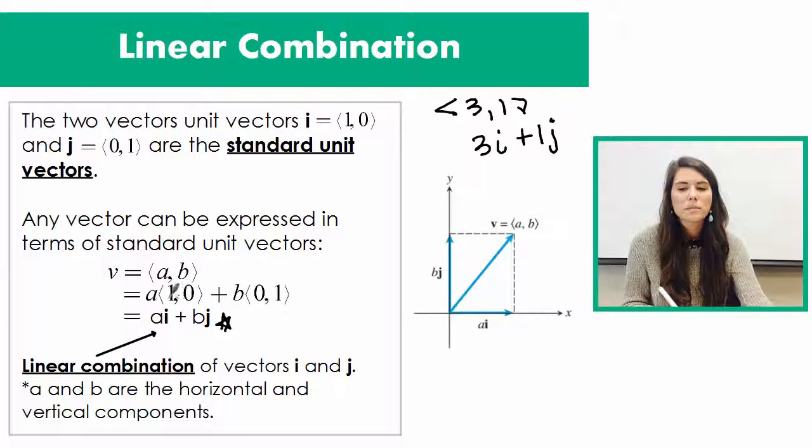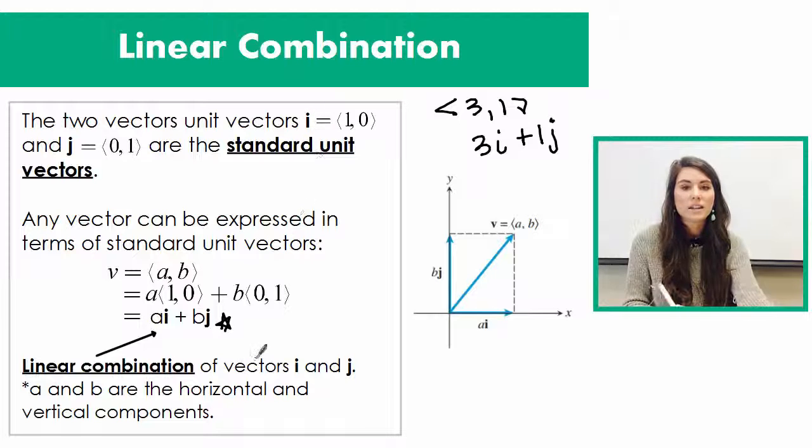take a and we multiply it by its standard unit vector, and b by the standard unit vector, which we labeled j and i. And that's it - we're done. We know how to create a linear combination of vectors.